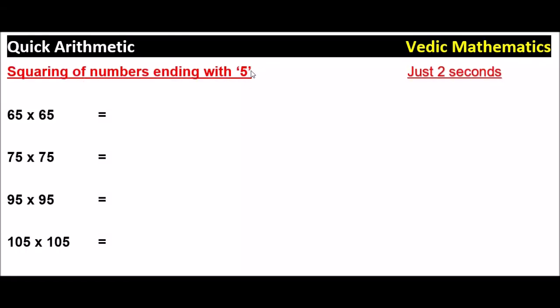Squaring of numbers ending with 5. For 65 times 65, 5 times 5 is 25, and 6 is there. What is the number after 6? 7. So 6 times 7 is 42. The answer is 4,225.